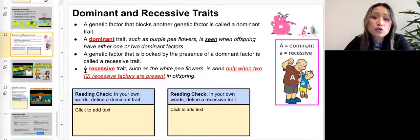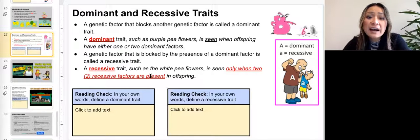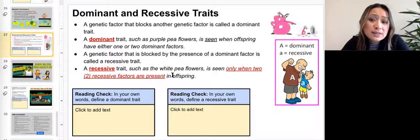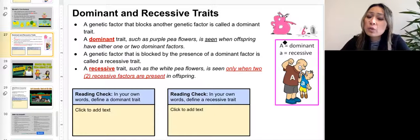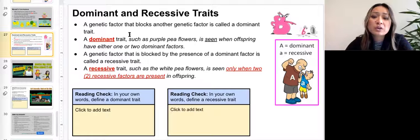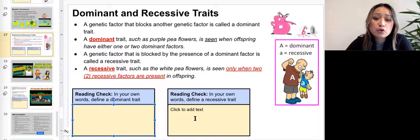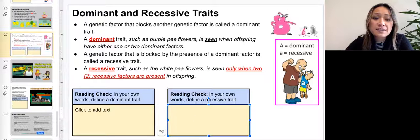This trait is called recessive. So a recessive trait, such as a white pea flower, is seen only when two recessive factors are present or two recessive alleles. Remember we use one letter to represent an allele. So either one specific dominant trait or one specific recessive trait. In the boxes below, define a dominant trait and define a recessive trait.